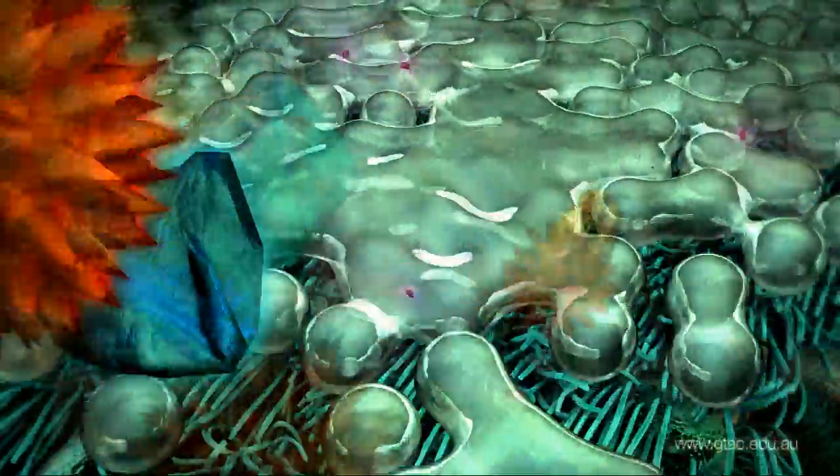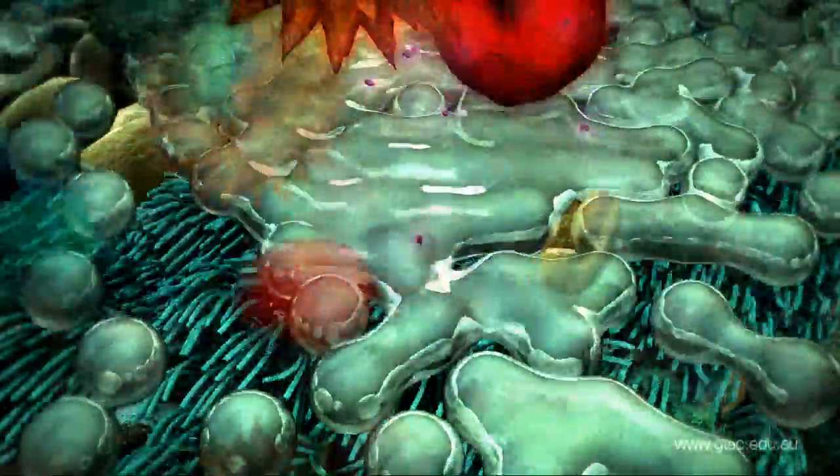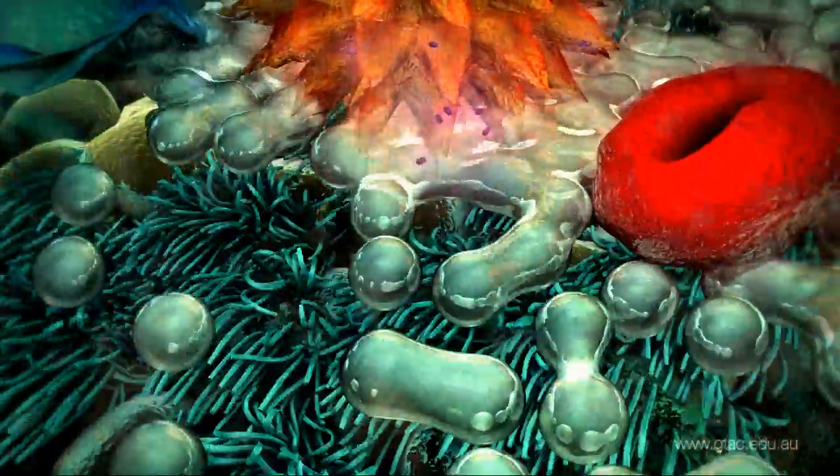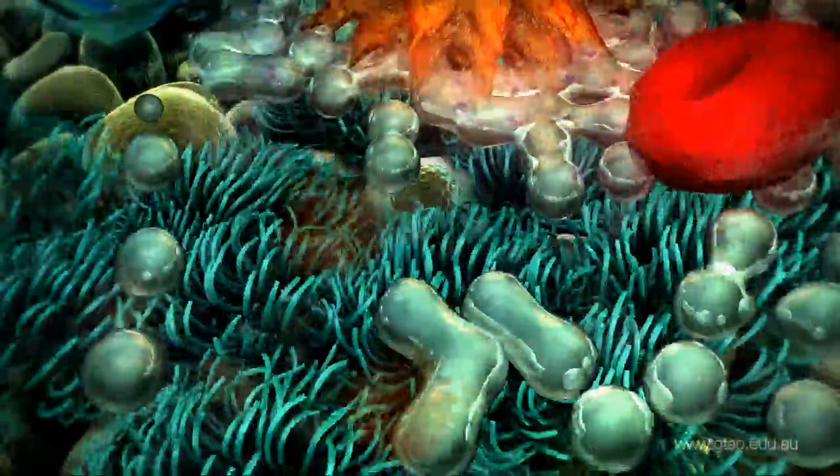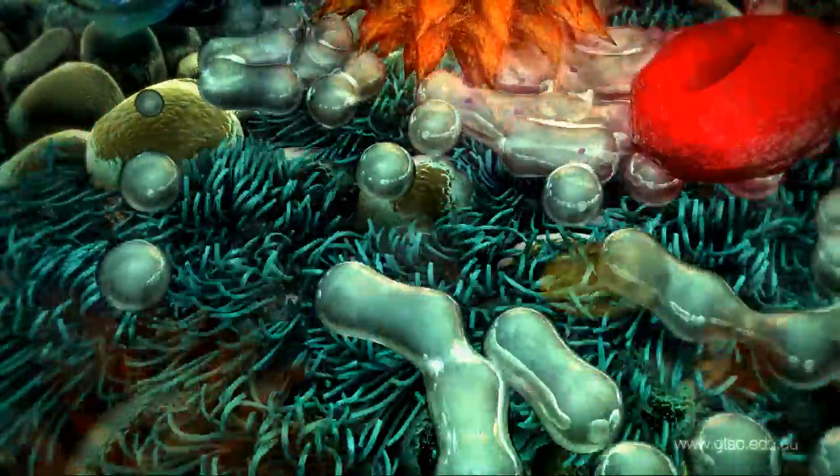The mucus forms a blanket over the tips of the cilia. It traps dust, pollen, and microbes. The cilia mechanically remove this debris by brushing it up and out of the airways.